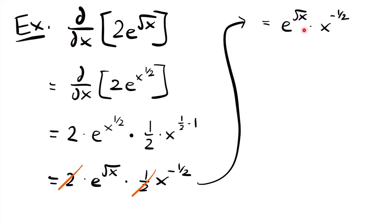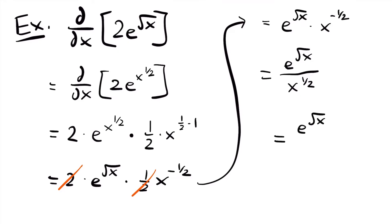Now we can rewrite this again. If we move x to the negative 1/2 power to the denominator, it gives a positive exponent. So we'll have e to the power of the square root of x divided by x to the positive 1/2 power. But that can also be rewritten as just the square root of x. And the 2 and 1/2 cancel each other out to 1. So our final answer is e to the power of the square root of x divided by the square root of x.